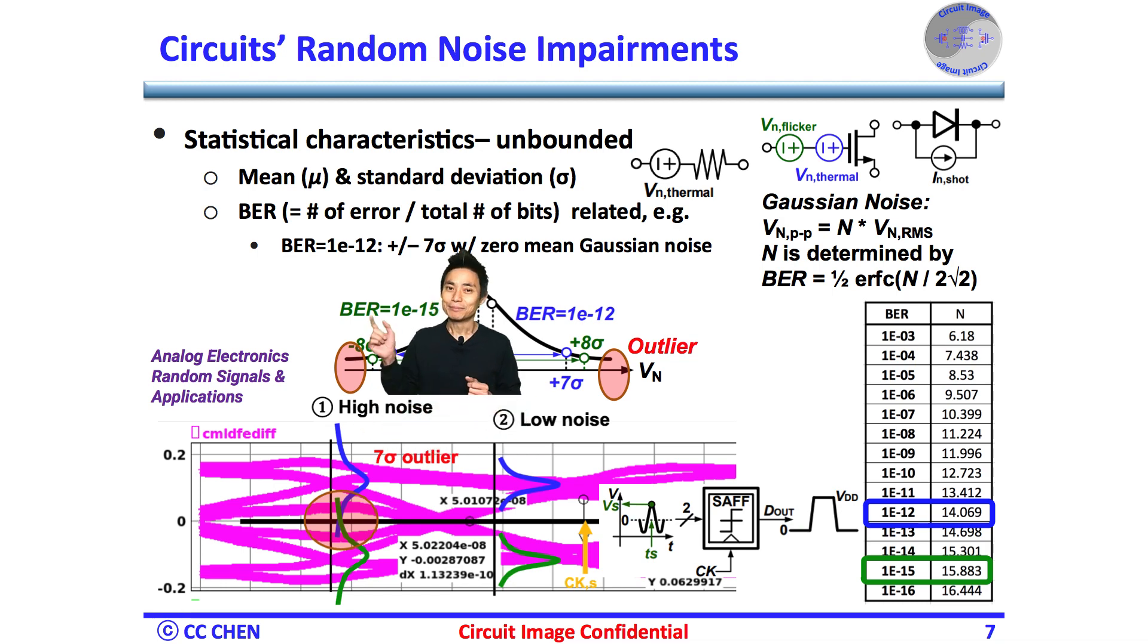Similarly, the BER equals 1e-15 should take plus minus 8 sigma peak noise amplitude. Then, after accounting the noise, we can move the link budget forward with it.